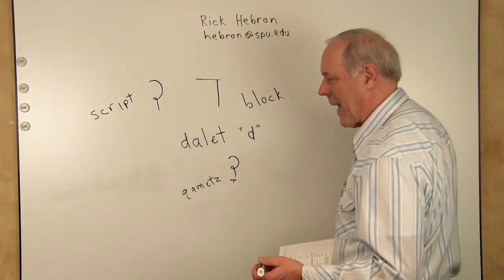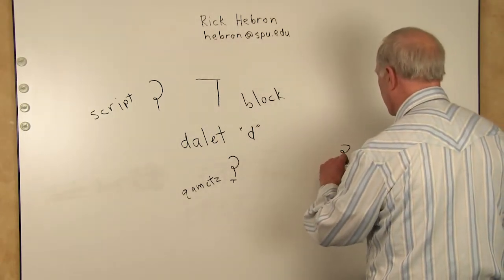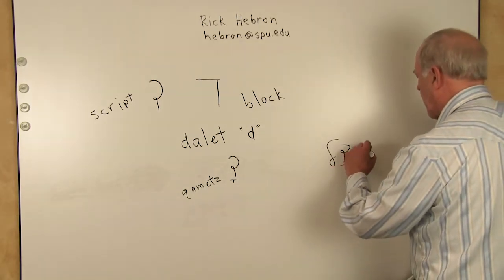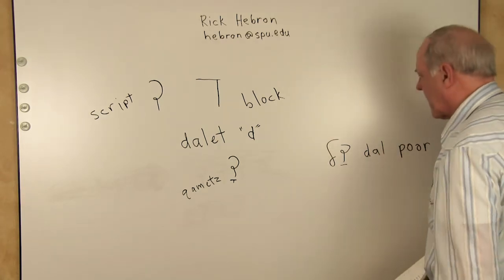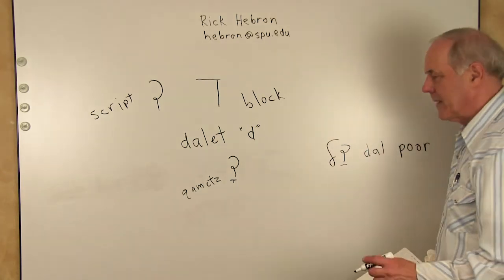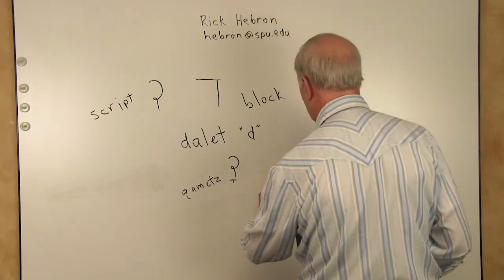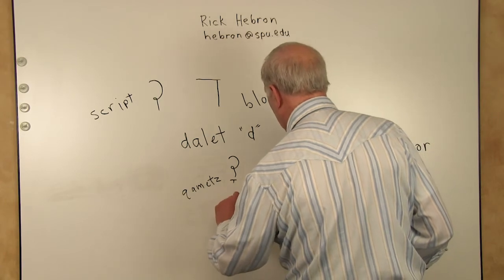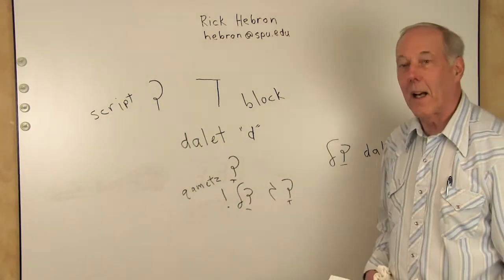The next word we'll learn is dal. Dal means poor. Dal. Write it, say it, and we can put the two together. Dag, dag, dal, poor fish, dag dal.